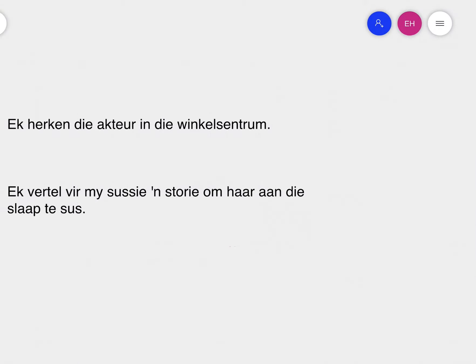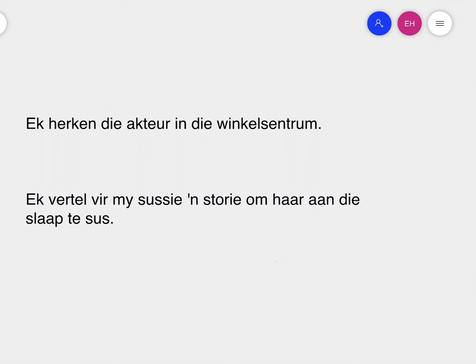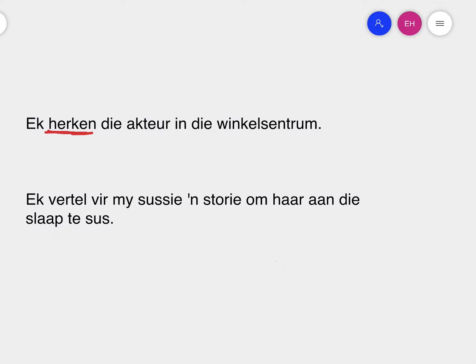So let's have a look at our examples. The first one: 'ek herken die akteur in die winkelsentrum.' 'Ken' would be a word on its own, meaning 'to know'. 'Her' means 'again', so 'herken' means 'recognize'. I recognize the actor in the shopping center.